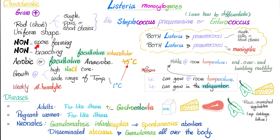Does Listeria make spores? Nope. Does it branch? No — it's non-branching, unlike Nocardia or Actinomyces. It could be aerobic or facultative anaerobic, and also facultative intracellular — so you have two facultatives. Listeria can grow in high concentrations of salt, so salt will not kill it. If you add salt to raw unwashed cabbage, Listeria can still grow. And if you put that cabbage in the refrigerator, Listeria can still grow because it thrives at cold temperatures.